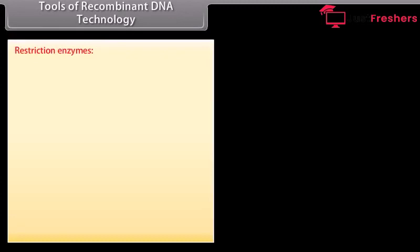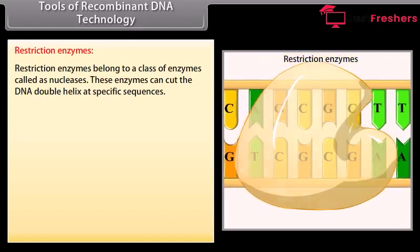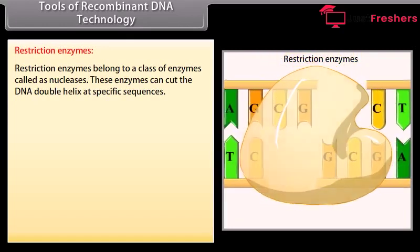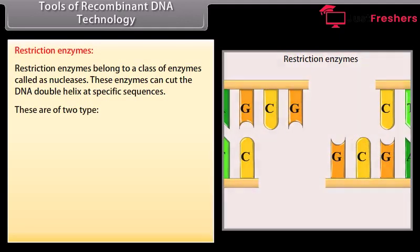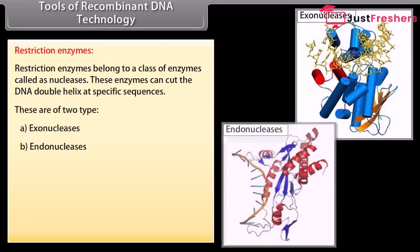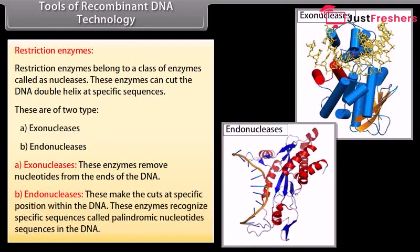Tools of recombinant DNA technology. Restriction enzymes belong to a class of enzymes called nucleases. These enzymes can cut the DNA double helix at specific sequences. These are of two types: exonucleases, which remove nucleotides from the ends of the DNA, and endonucleases, which make cuts at specific positions within the DNA. Endonucleases recognize specific sequences called palindromic nucleotide sequences in the DNA.